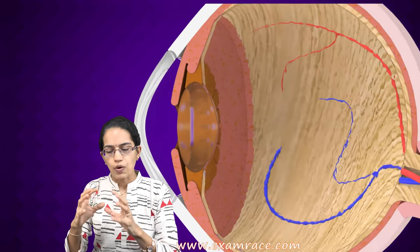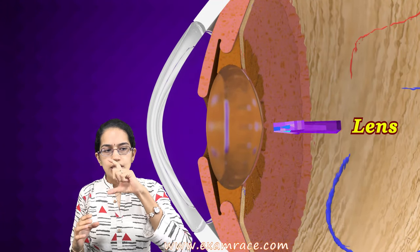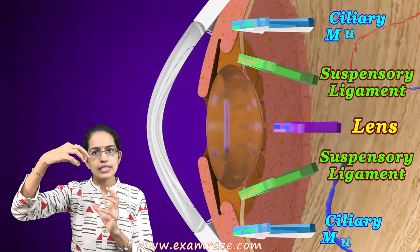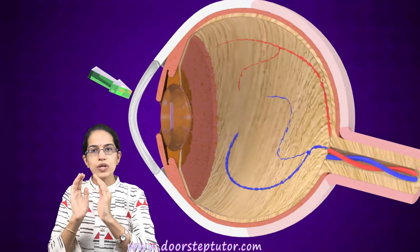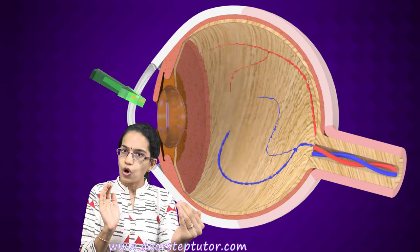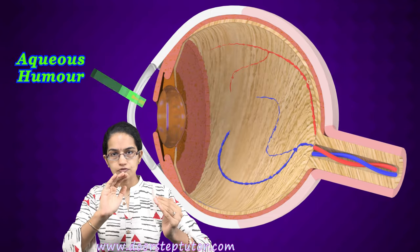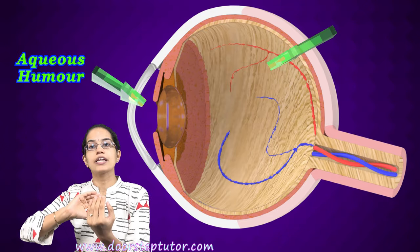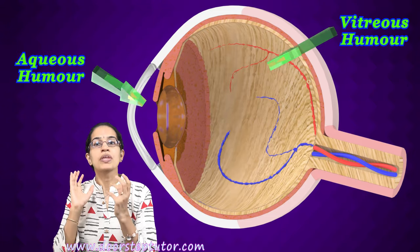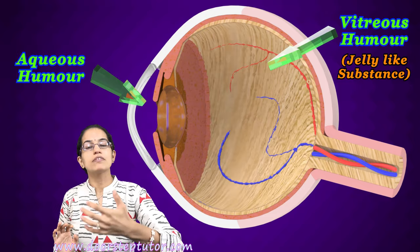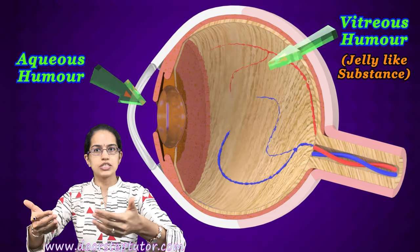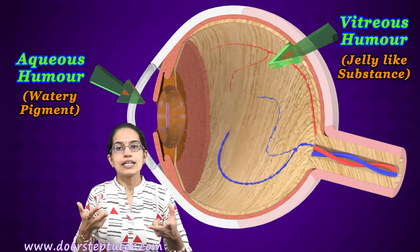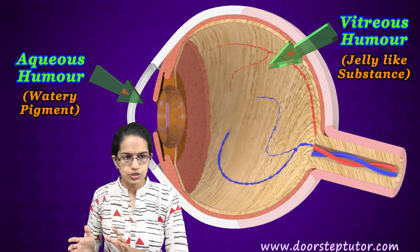Another important structure is the lens, which is suspended by suspensory ligaments and supported by ciliary muscles. Between the lens and the outermost cornea, you have the aqueous humor that fills the space. Beyond the lens, on the back side of the eye, you have the vitreous humor. Vitreous humor is a jelly-like substance, while aqueous humor, present between the lens and the cornea, is a watery fluid.